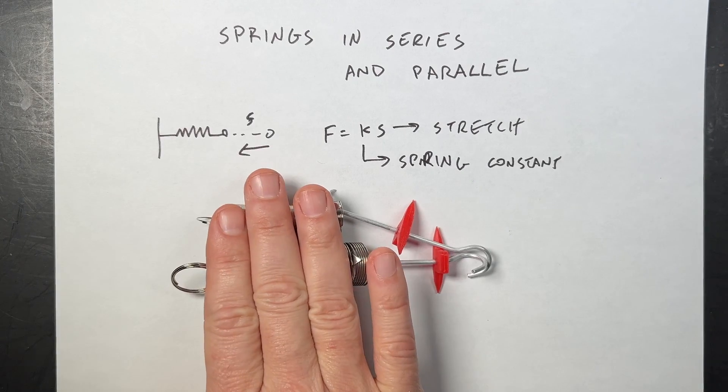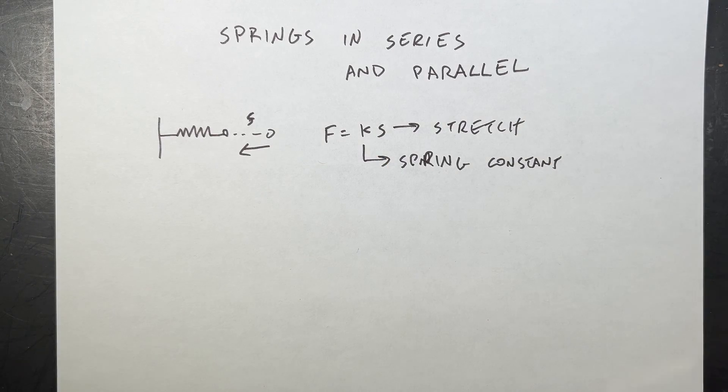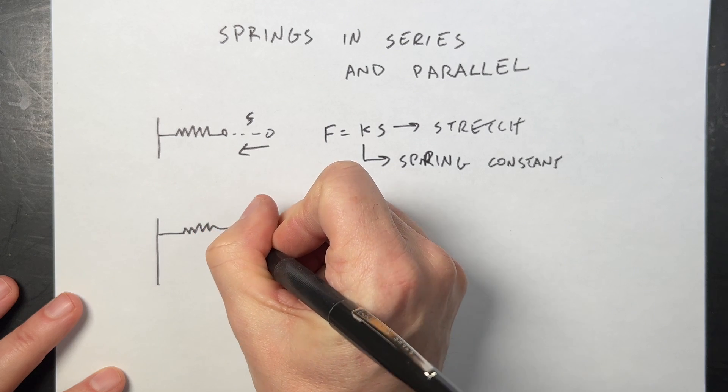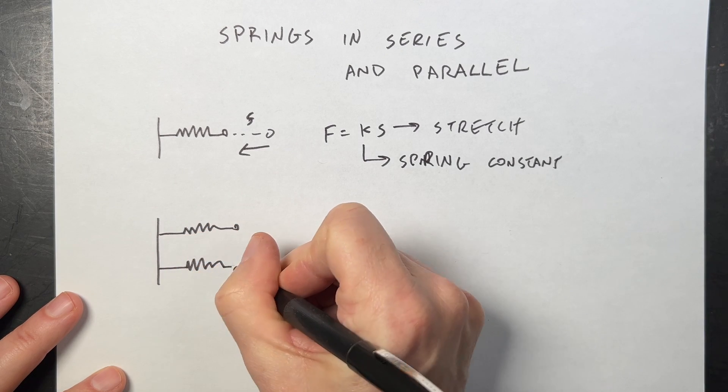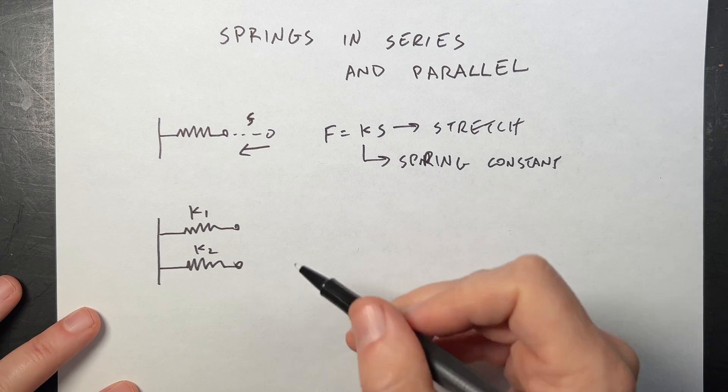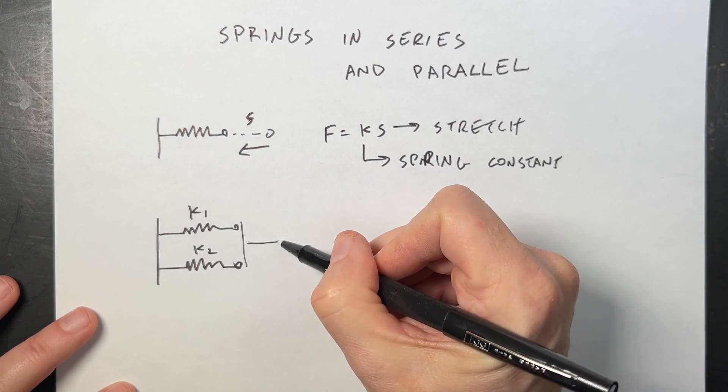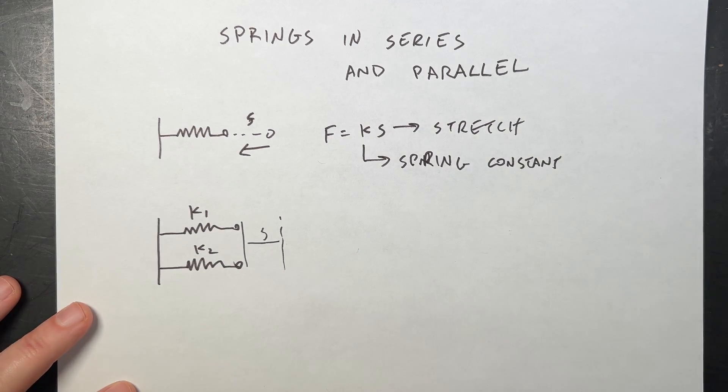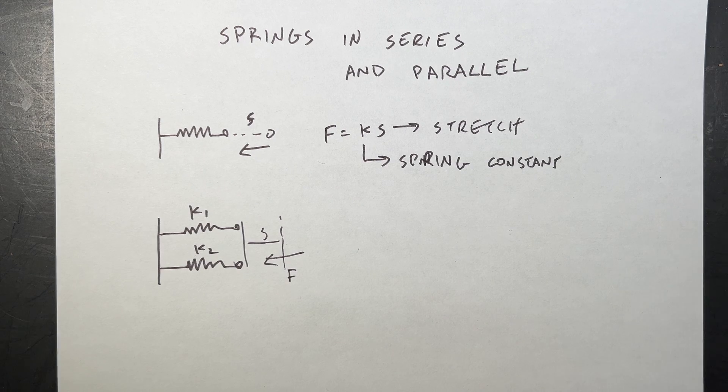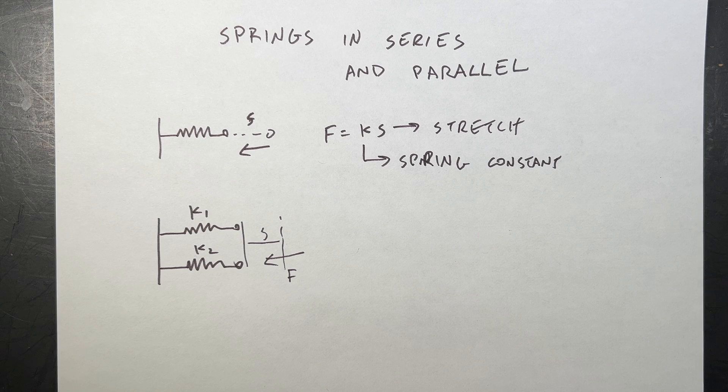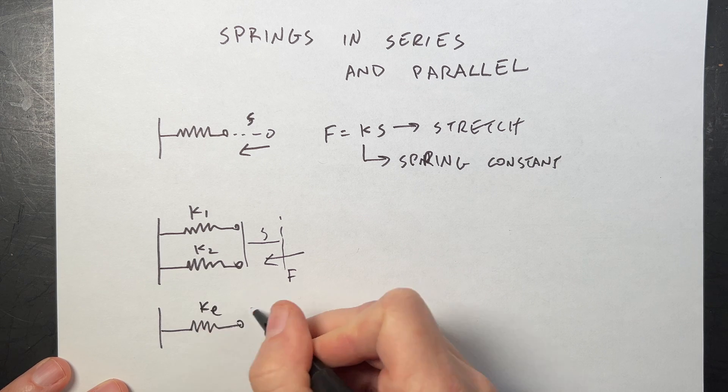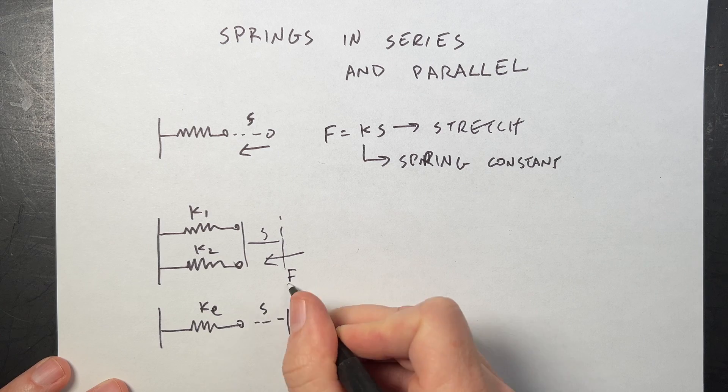So let's look at two springs, different spring constants in parallel. So imagine that I have two springs, and they're in parallel. This is spring with the spring constant K1, and that's the spring constant K2. And then I stretch these a distance S. And when I do that, there's a force pulling back, F. And I want to find the effective spring constant that I can replace this with a single spring K equivalent, such that I stretch at the same distance and I get the same force.